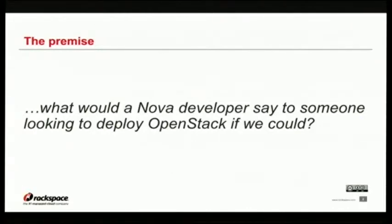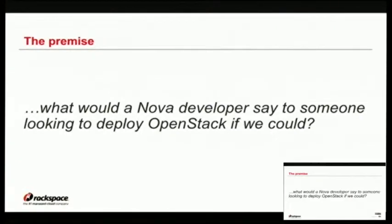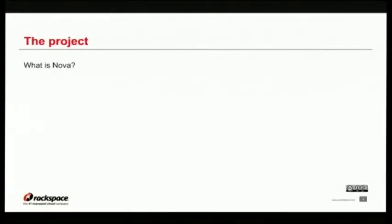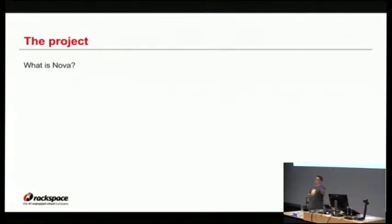The premise of the talk is: what would a Nova developer say to a deployer before they deployed? What mistakes do we commonly see? What do we wish people had considered before it was too late? In 10 seconds or less — what is Nova? Nova is the component of OpenStack that manages virtual machines, hypervisors, and compute resources. It takes pools of machines, preferably hundreds, and when you make an API request for a virtual machine, we pick a machine and do the thing.